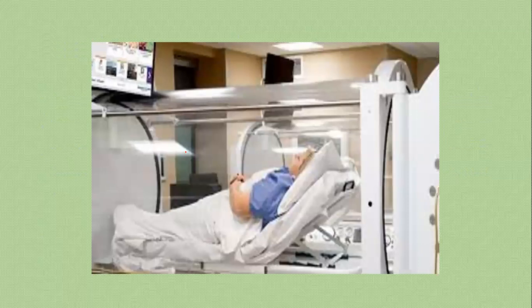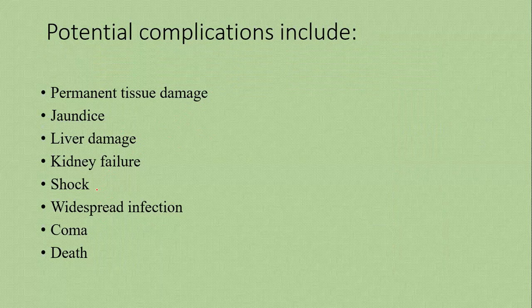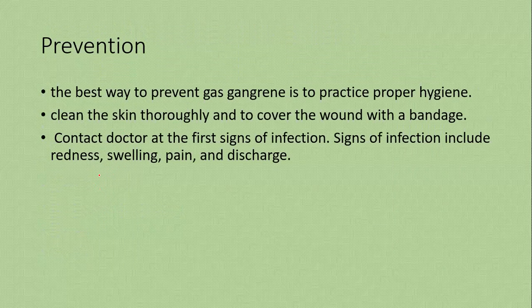This is a picture of a hyperbaric oxygen therapy system in which you can place the patient in an oxygen chamber to provide continuous oxygen supply. Complications of gas gangrene include permanent tissue damage if not treated early, jaundice, liver damage, kidney failure, shock, widespread infection, coma, and death.